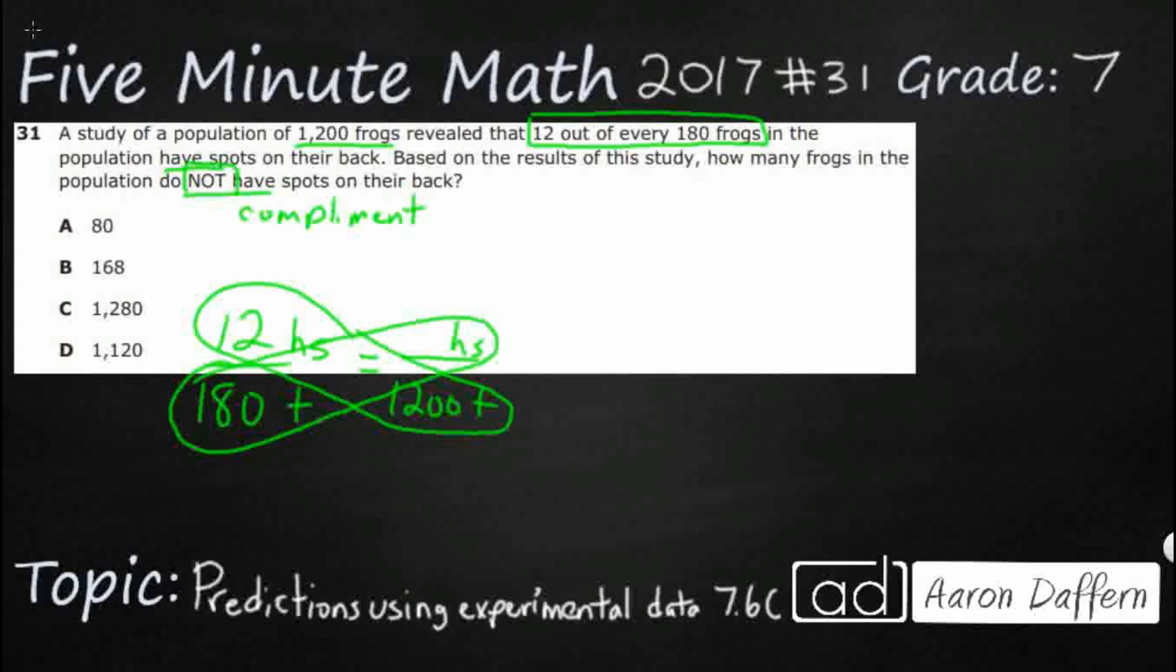Now, what happens if I don't use that? If there's 12 out of every 180 frogs have spots, then I need to take 180 minus 12 from that. And that's going to get 168. So this is does not have spots. I could make a cross multiplication like this: 168 does not have spots, and that's over my 180 total. And I'm looking for does not have spots, and that's over 1,200.